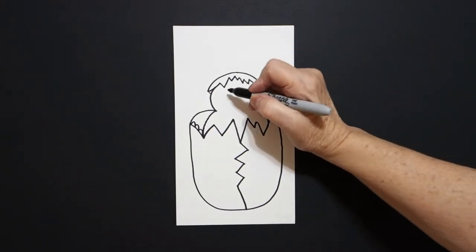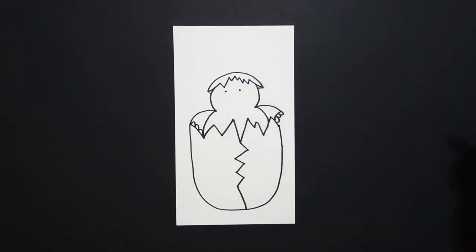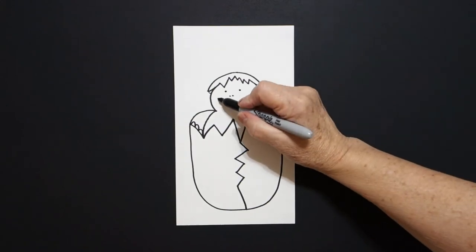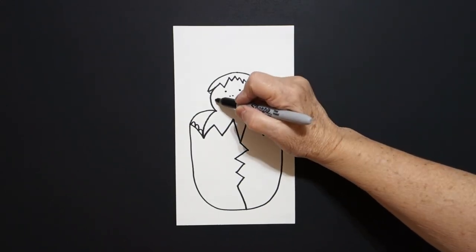Inside I put one dot, two dots, one, two little dots, a big curve line, little curve line on the right, little curve line on the left.